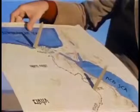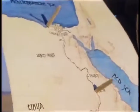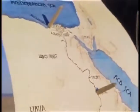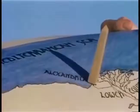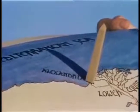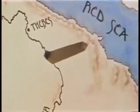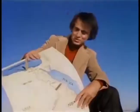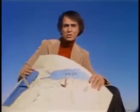But how could it be, Eratosthenes asked, that at the same instant there was no shadow at Syene and a very substantial shadow at Alexandria? The only answer was that the surface of the earth is curved.